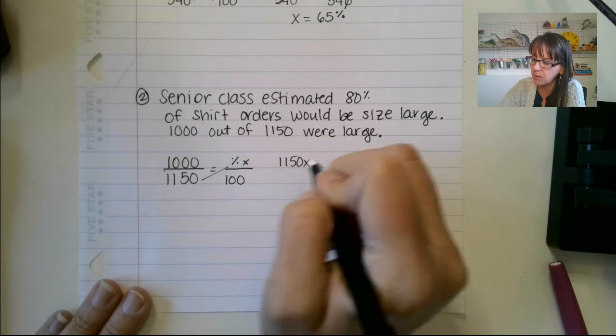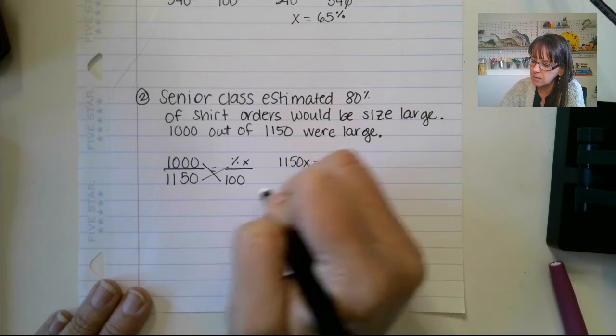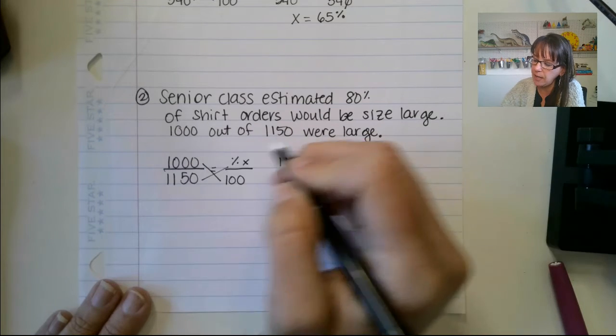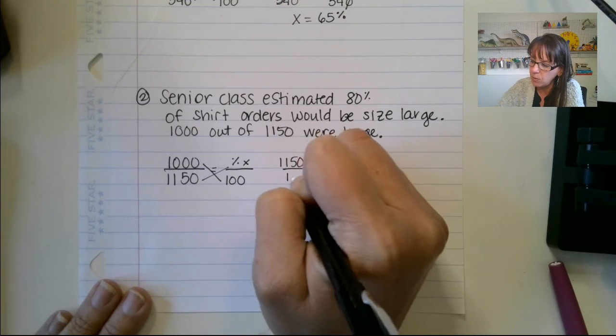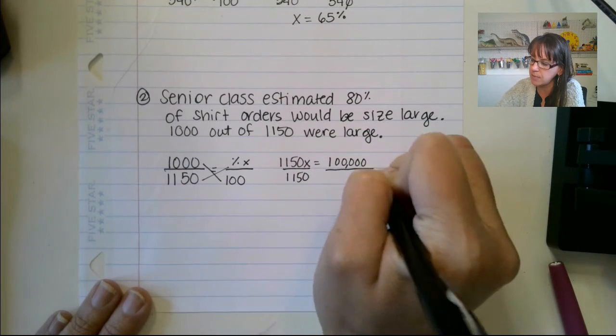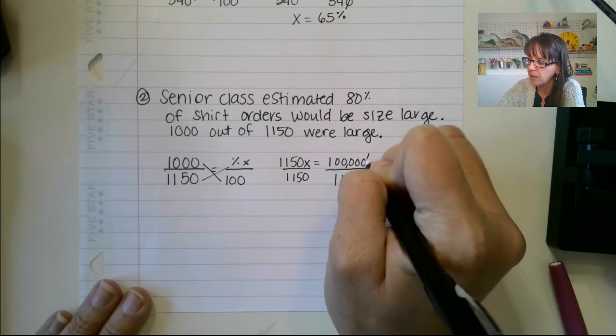1,150x equals this 1, 2, 3, 4, 5. 1, 2, 3, 4, 5. So we have 5 there. 1,150. Divide both sides by 1,150. All right.